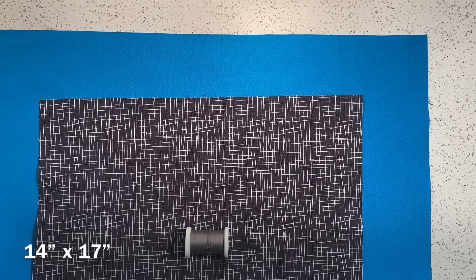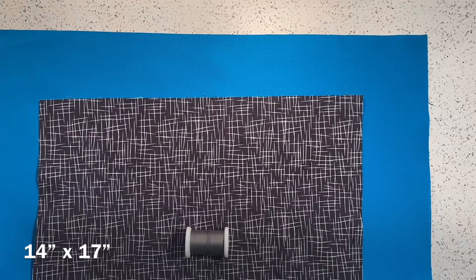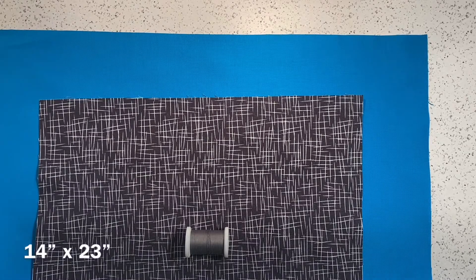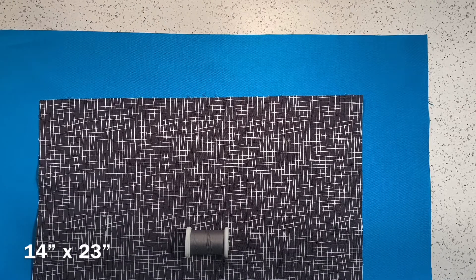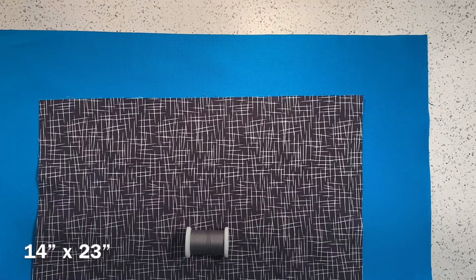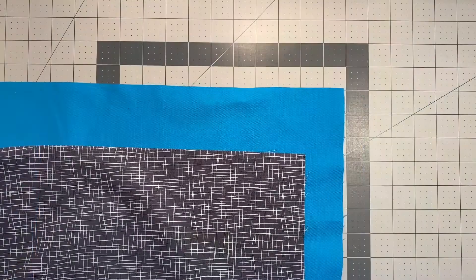Before we start sewing, cut one piece of fabric down to 14 by 17 inches. For me, that's the charcoal piece. Next, cut the larger piece down to 14 by 23. Again, that's my teal piece.